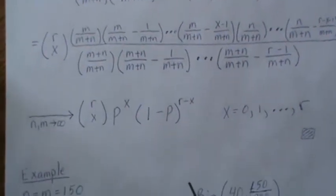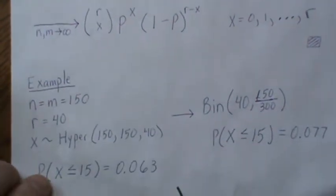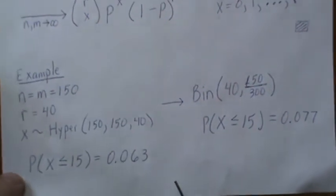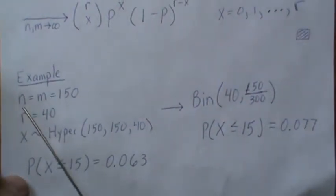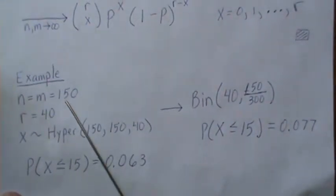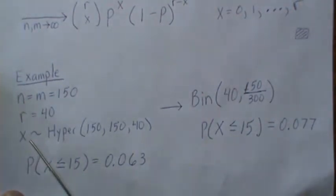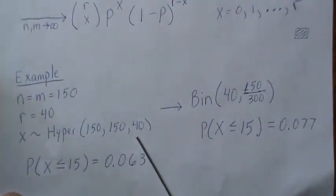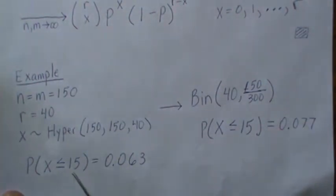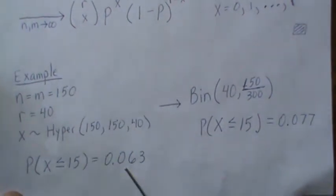So how do you use the binomial to estimate hypergeometric? Well, here's a quick example. If we let n and m be 150 and r be 40, x is a hypergeometric with 150, 150, and 40. The probability that we're less than or equal to 15 is 0.063.